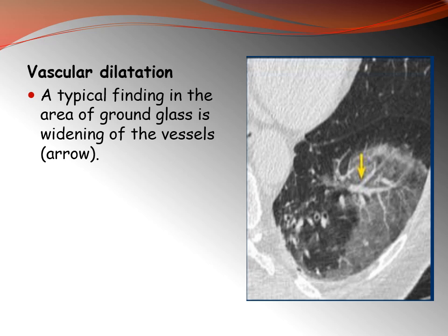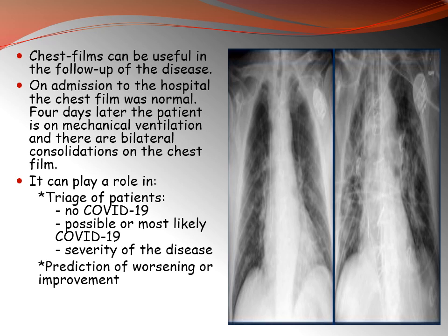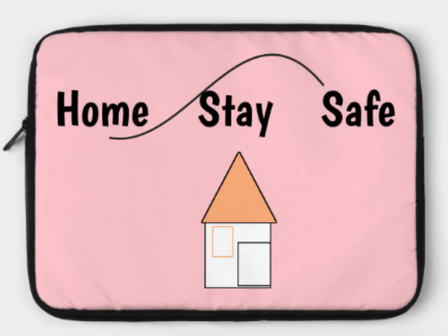Other CT findings in COVID-19 include vascular dilatation — a typical finding in areas of ground glass opacity — and less commonly, pleural effusion, pericardial effusion, lymphadenopathy, cavitation, and halo signs. There is much overlap between the CT pattern of COVID-19 and other viral pneumonias. Chest CT can be useful in follow-up of disease progression. Plain x-ray can play a role in triage of patients: determining possible or likely COVID-19, assessing severity of disease, and predicting worsening. Thank you for being a great audience. Stay home, stay safe.